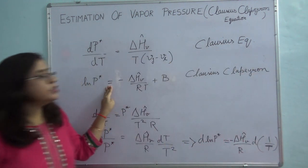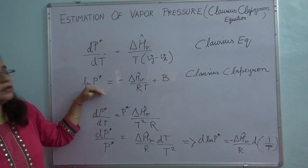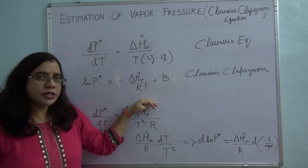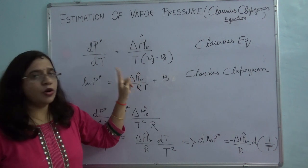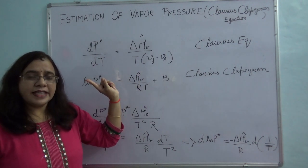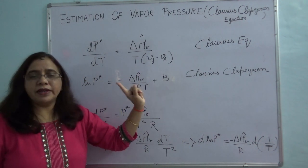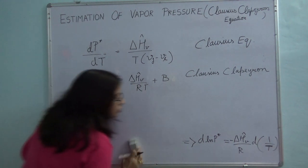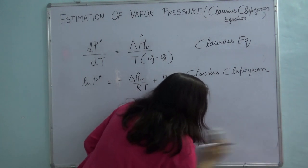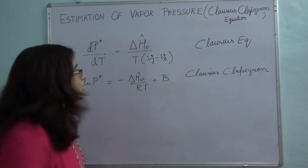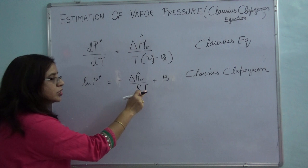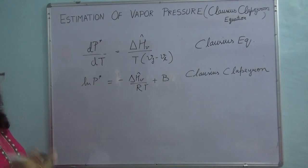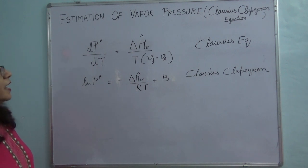I can use this equation to determine vapor pressure if I know the temperature, or vice versa. But in order to use this equation, I need to know the value of ΔHv and the constant of integration B. I should either have these two values known beforehand, or I can measure P* at two different temperatures. Let's take an example and understand it.